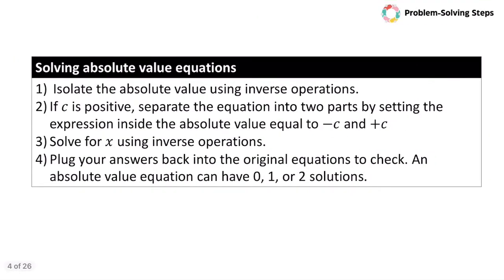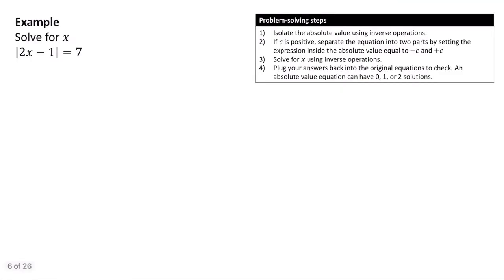Here's how we're going to solve absolute value equations. We start off by isolating the absolute value using inverse operations. For this first example, the absolute value is already isolated, so we break it into two separate equations: 2x minus 1 equals 7, and 2x minus 1 equals negative 7.